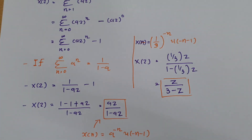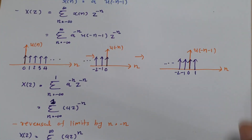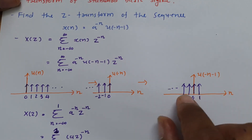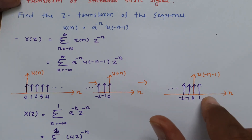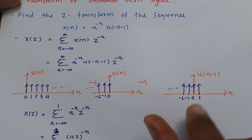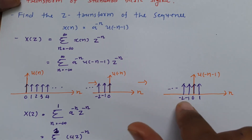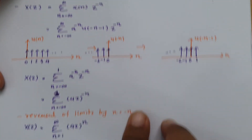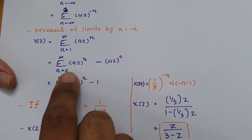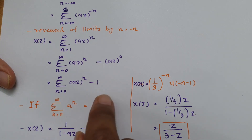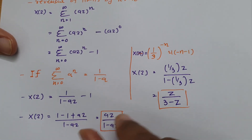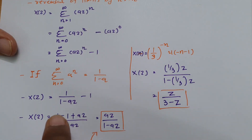One more thing to consider: sometimes there may be more shifting. If it is u(-n - 2), the limit ranges from -∞ to -2. If it is u(-n + 1), the limit goes from -∞ to +1. When the limits change, we apply the same adjustment — using the formula for n = 0 to ∞ and subtracting the extra terms as needed.